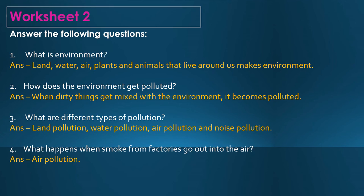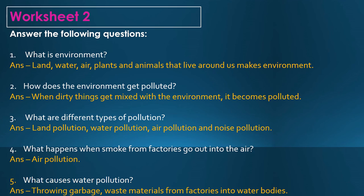Fourth: what happens when smoke from factories goes out in the air? The answer is air pollution. Fifth: what causes water pollution? Throwing garbage and waste material from factories into the water bodies causes water pollution.